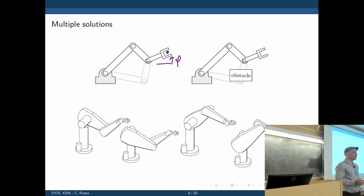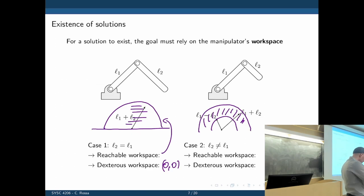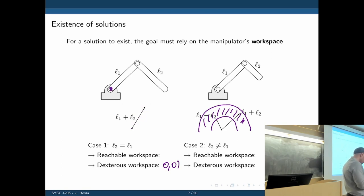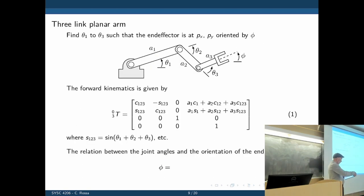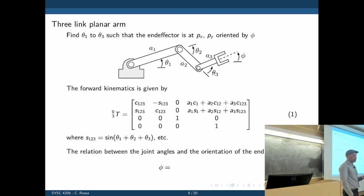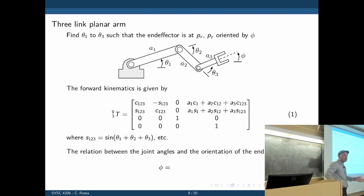The dexterous workspace means a point reachable with any orientation. For the two-link case: fold link one and link two so the tip is at the origin, then you can revolve and reach that point with any possible orientation. Now for the three-link planar manipulator example — I cannot give a recipe that works for every manipulator, but inverse kinematics for most common structures are already available and do not need to be re-derived.